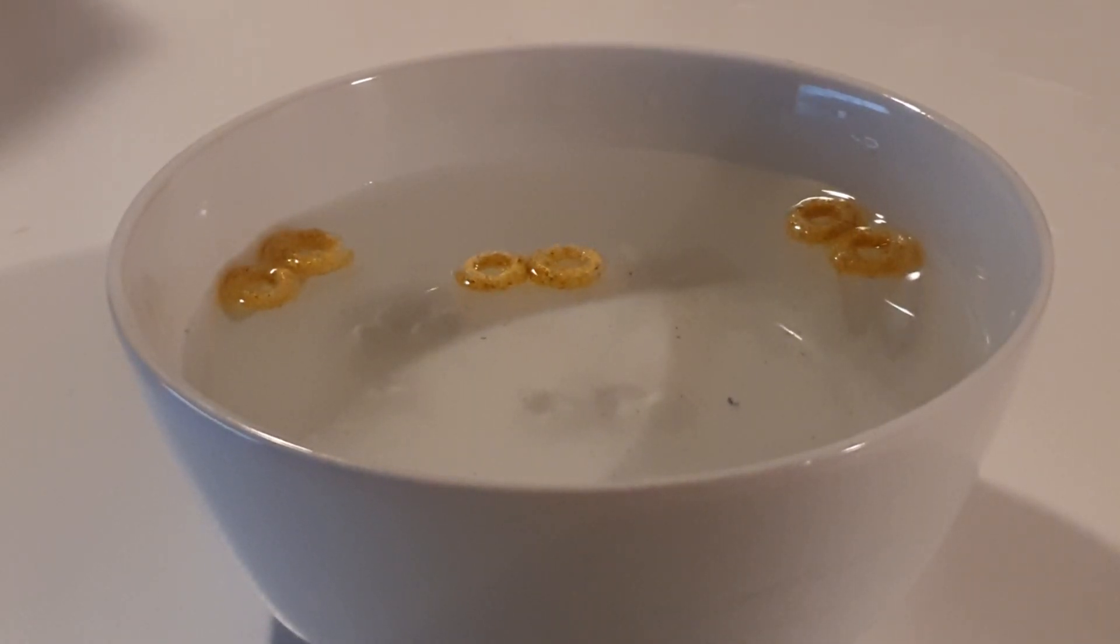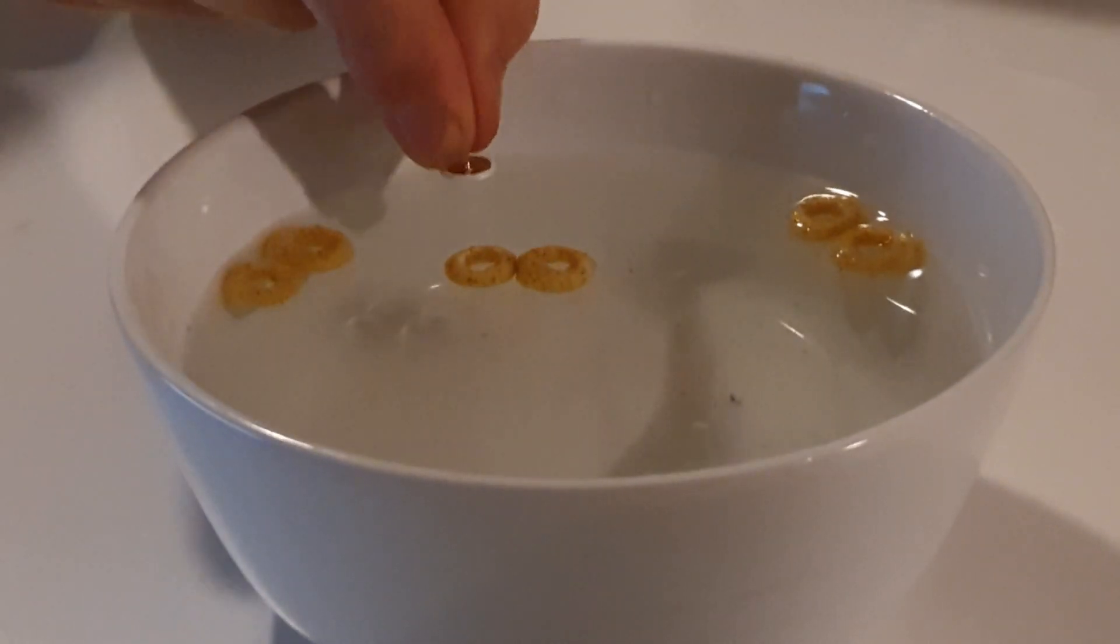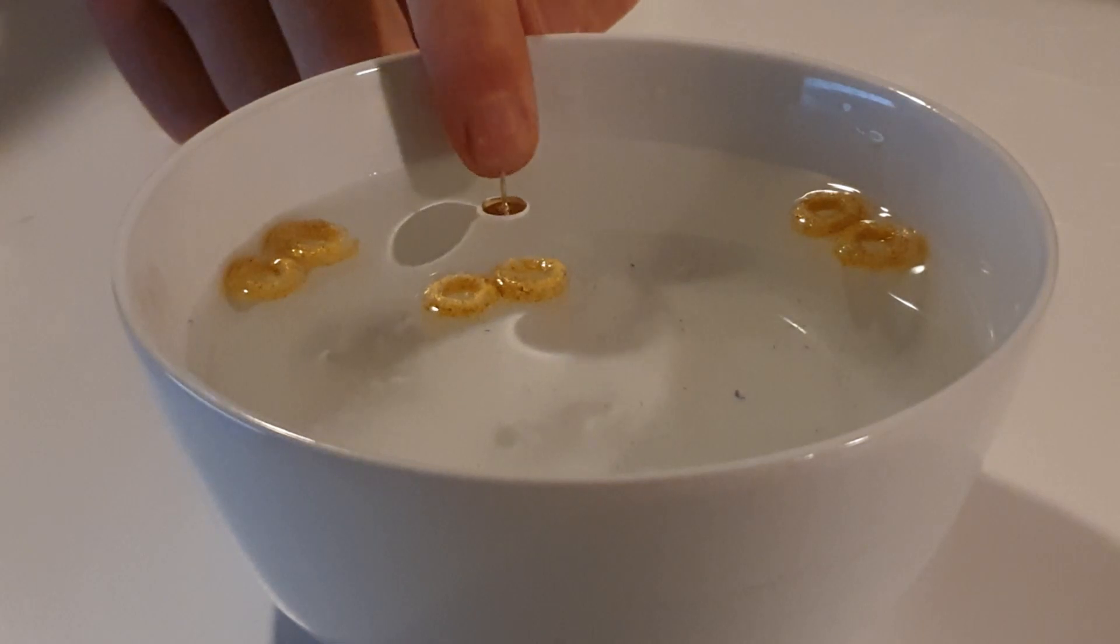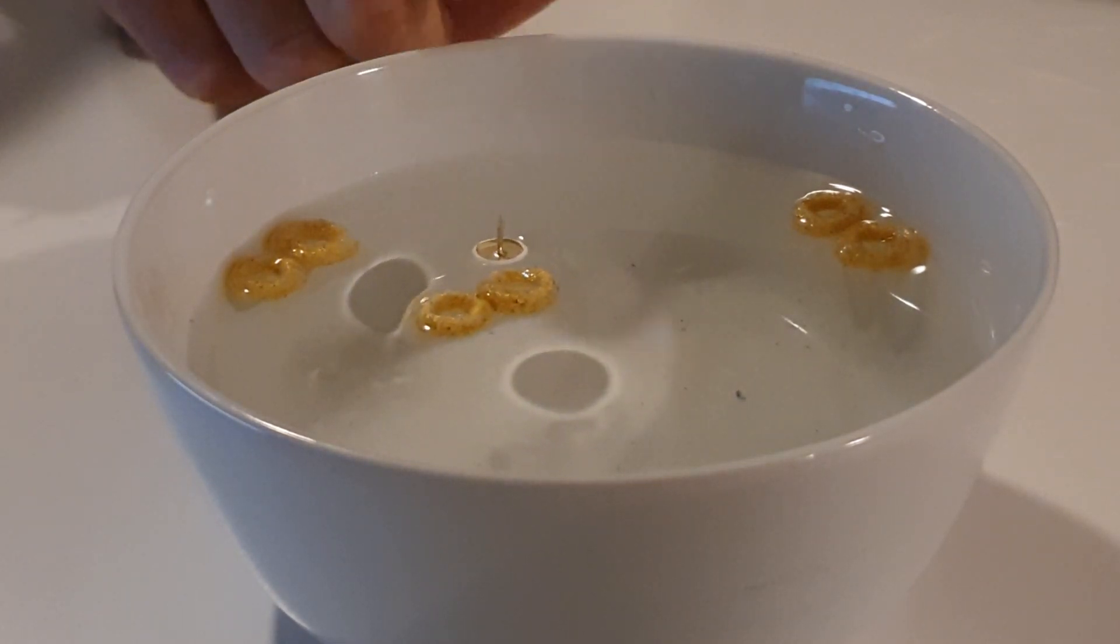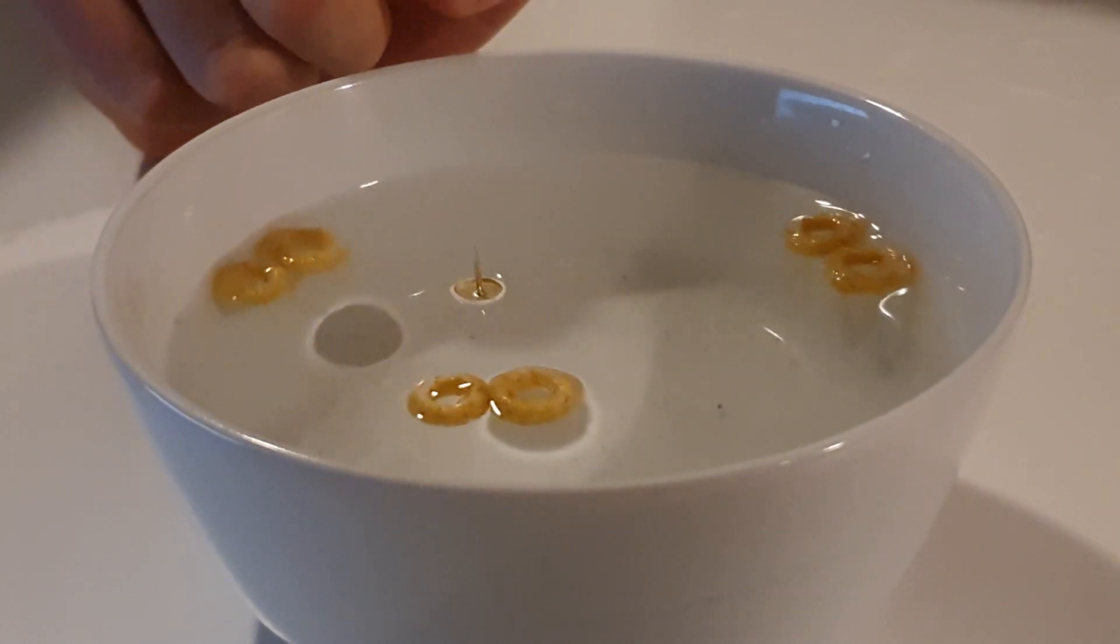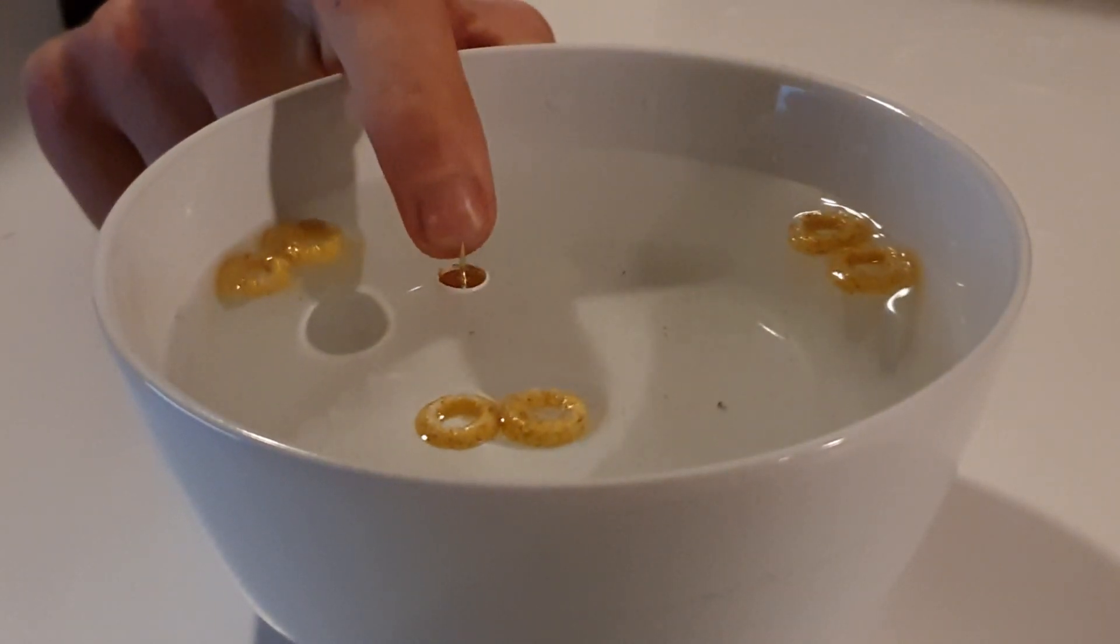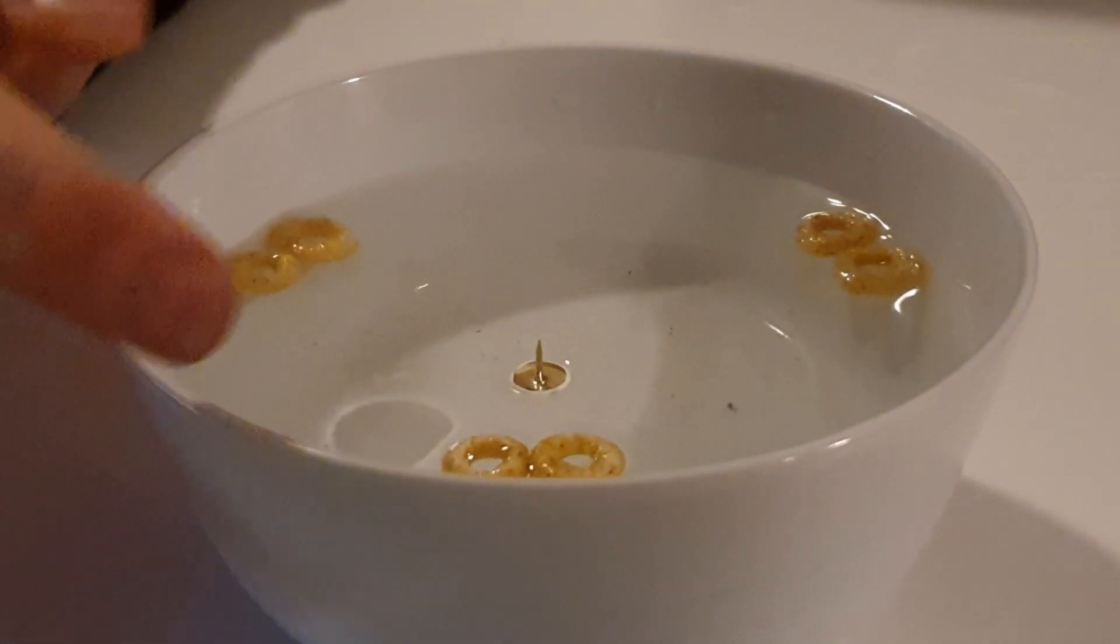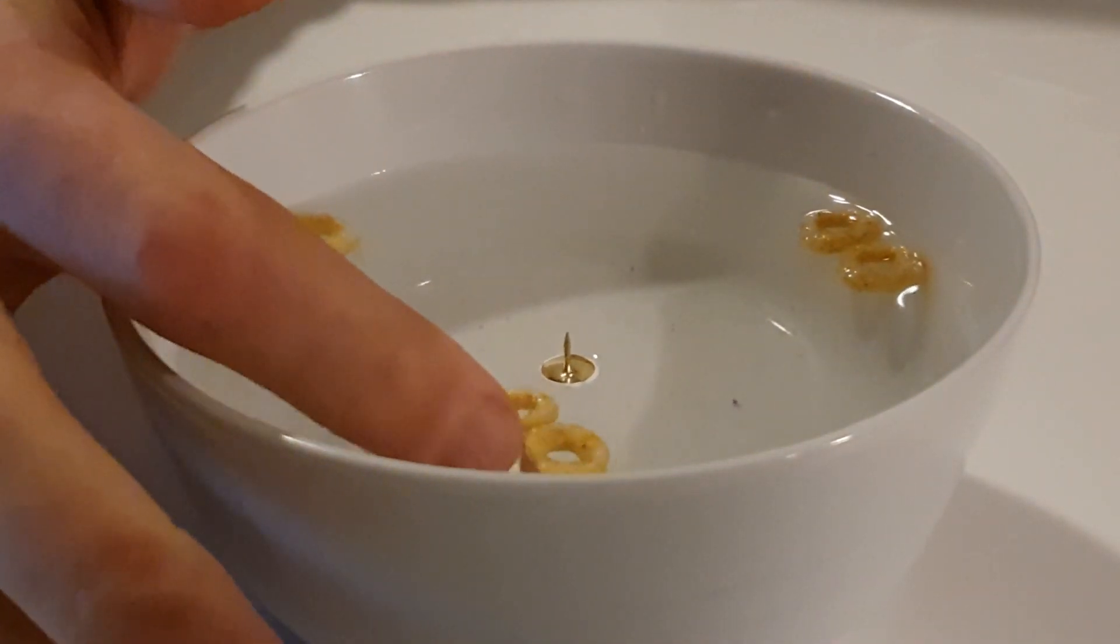To make it even more interesting, we can look what happens when we place a drawing pin in a bowl with Cheerio Amigos. As you can see, the drawing pin actually repels the Cheerios. The explanation for this is the tendency of the Cheerios to move to the highest points on the surface. This also means that the Cheerios move away from holes in the surface. A drawing pin creates such a hole, and will thus repel the Cheerios.